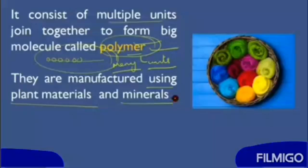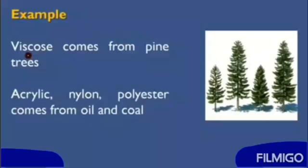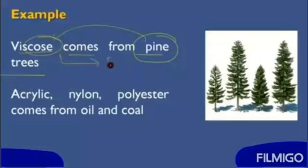These polymers are manufactured using plant materials and minerals. For example, viscose comes from pine trees, which are naturally found in hilly areas.